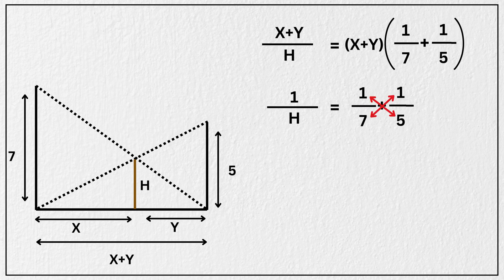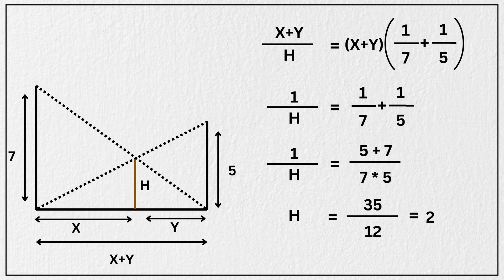Now by cross multiplication, and taking common denominator we get, 1 divided by h equal to 5 plus 7 divided by 7 times 5. Therefore the h equals 35 divided by 12, which is 2.916 meters. And that is our final answer.